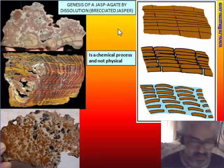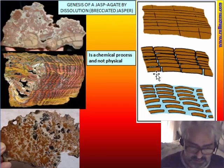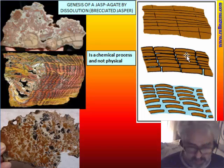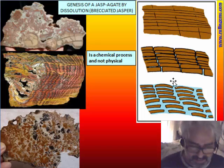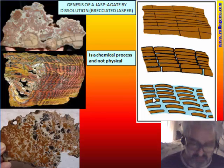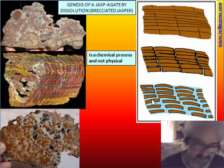A kind of jasperagate can be a brecciated jasper that is formed by dissolution of a normal jasper — which can be laminated or another kind of jasper. By a chemical process along fractures or joints between laminas, the jasper can be dissolved and replaced by chalcedony. This is a chemical process, not a physical process, because it is too difficult to produce fragmentation of jasper — which is a very tough material — by physical process alone.